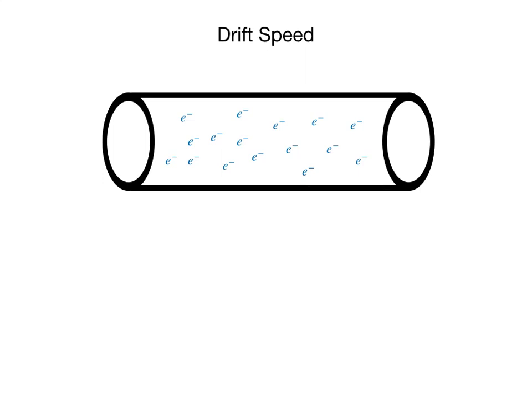Today's topics are drift speed and current density. Let's begin by taking a look at a section of wire filled with valence electrons.